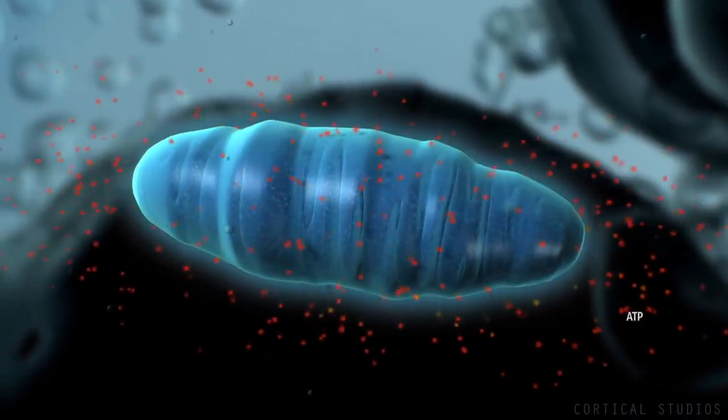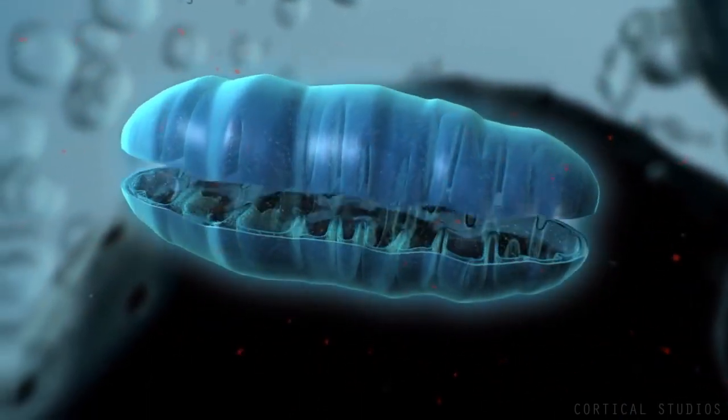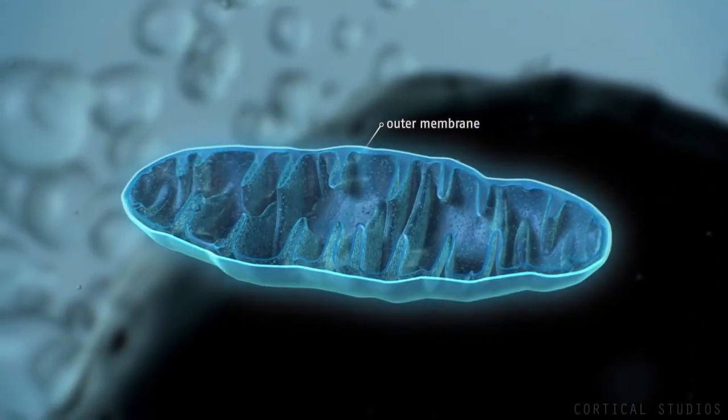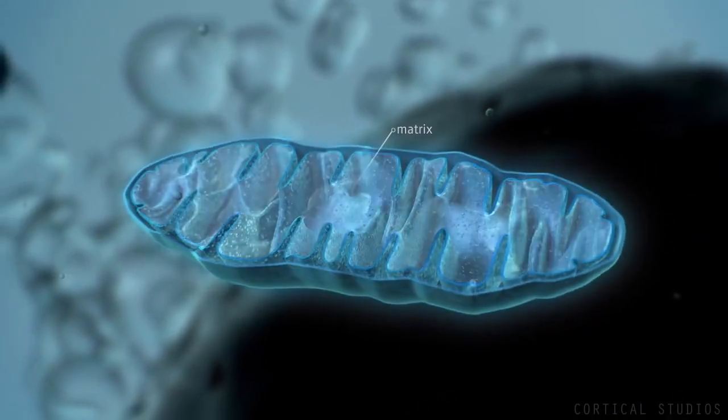ATP is released by the mitochondria so cells can use it. Mitochondria consist of two membranes: an outer membrane separating it from the cytosol, and an inner membrane surrounding the so-called matrix.